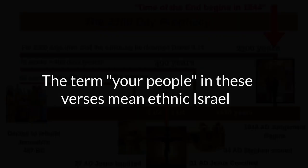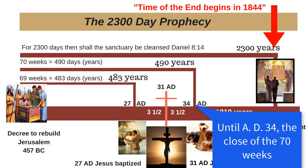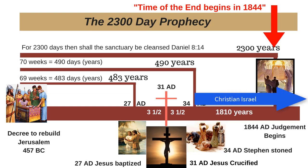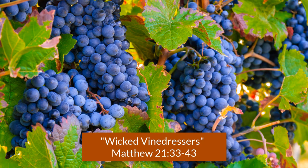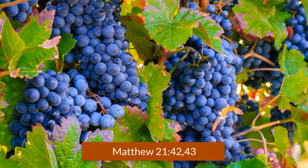The term 'your people' in these verses means ethnic Israel until A.D. 34, the close of the 70 weeks. And after that it means Christian Israel, the church of all believers in Jesus, both Jew and Gentile. Read the parable of the wicked vinedressers found in Matthew 21:33-43 for more details. For now, let's just read Matthew 24, verses 42 and 43.